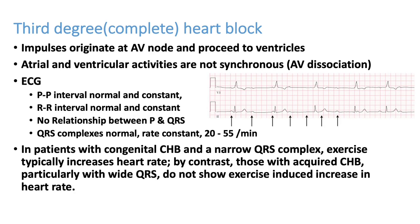In third degree heart block, P waves come regularly and QRS complexes come regularly, but there is no association between the P waves and QRS complexes. The QRS complexes come at a rate of around 35 to 40. The patient will have ventricular contraction and pulse, but with severe, significant bradycardia. All symptoms of bradycardia can be seen in these patients.